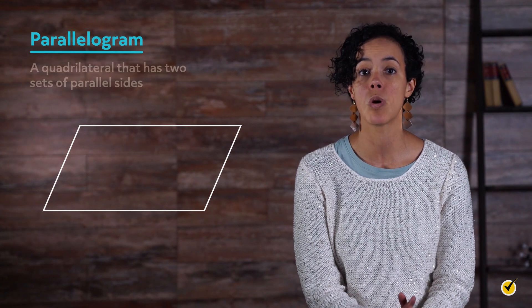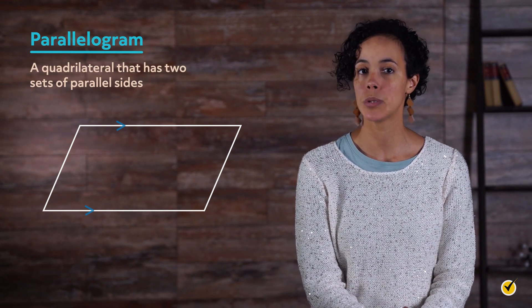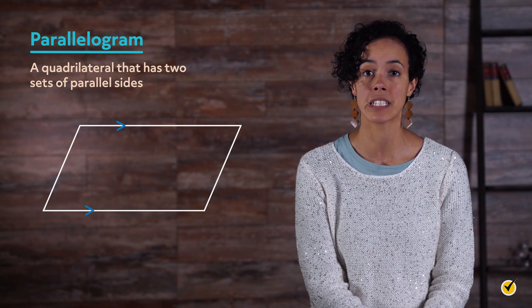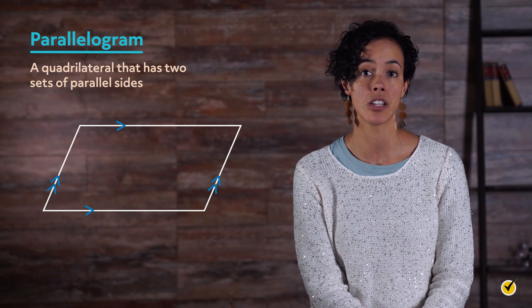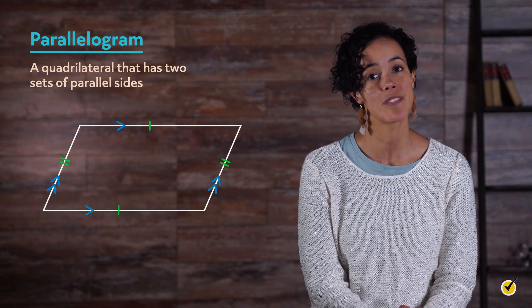A parallelogram is a quadrilateral that has two sets of parallel sides. The blue arrows denote which sides are parallel to each other. The opposite sides of a parallelogram, marked by green tick marks, are congruent, which means they have the same measure.